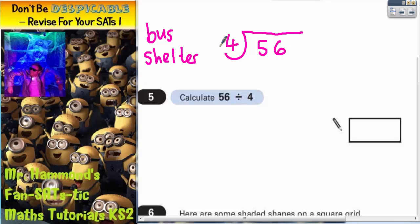And you see how many 4s go into 5. One lot of 4 will go into 5, but then there's one left over, one remainder. And the one remainder gets carried to the next column to turn the 6 into 16. So now this makes 16.